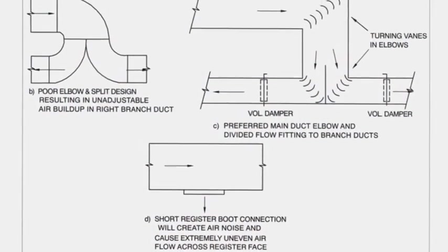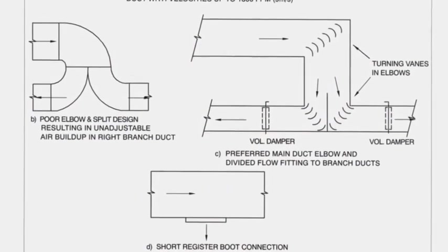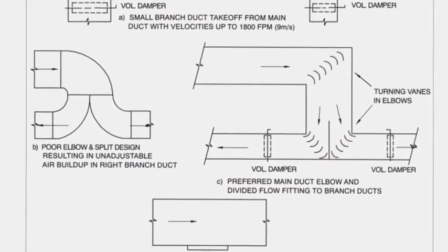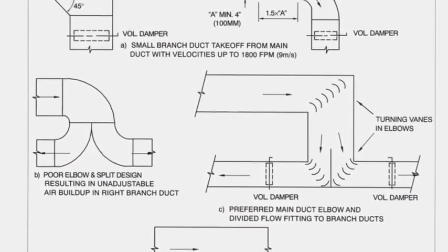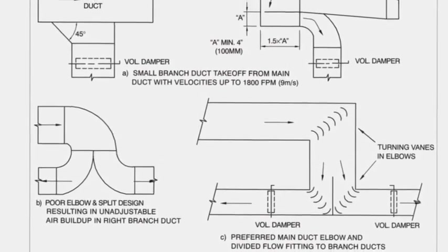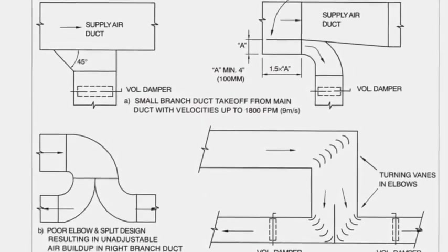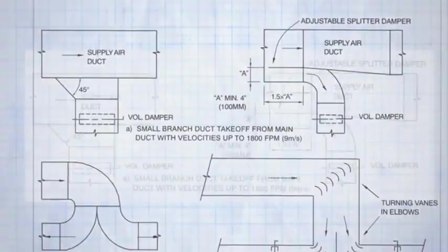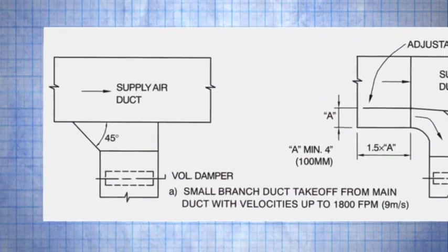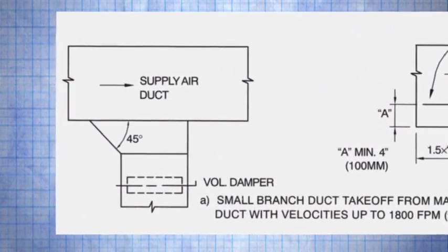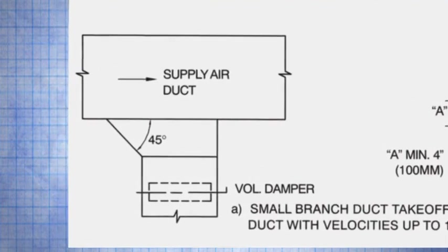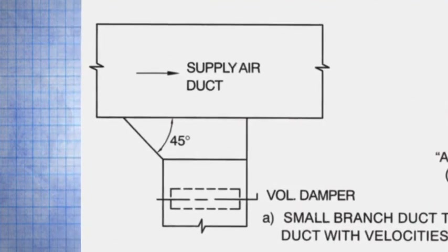From a duct design perspective, it is better to specify that dampers be installed in the branch ducts where air volume can be controlled without introducing interference into the airflow of the main duct. One additional design point to consider is that if the damper is close to the main duct, the axis of the damper blade should be parallel to airflow.